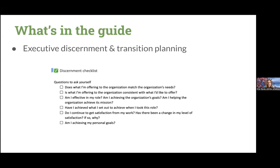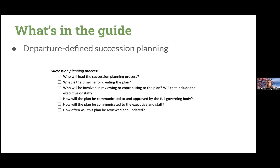The third chapter is around what I've called executive discernment — really a thought process of planning through when someone wants to leave, why they might want to leave, if they're ready to leave, and then thinking about their own personal transition versus the organization's transition and how they want to leave. There are lots of checklists for those of you who like to cross things off a list. The last chapter is about departure-defined succession planning: how is the organization going to move forward in the absence of the departing leader? Again, it's replete with checklists for governing bodies and staff.